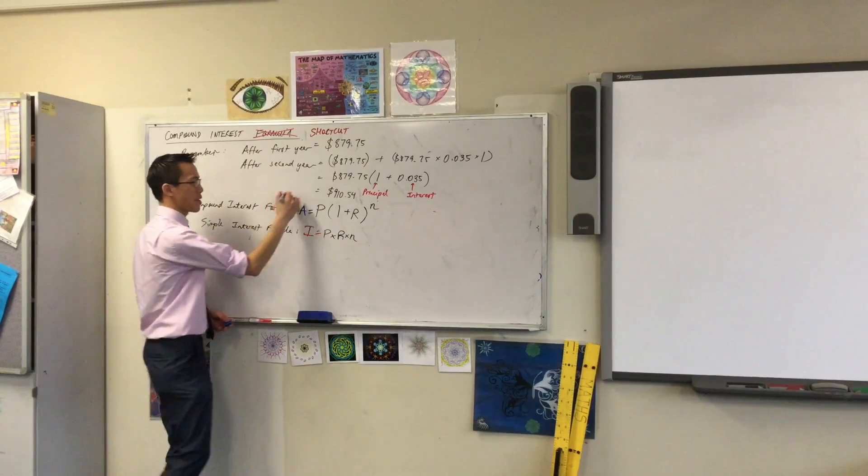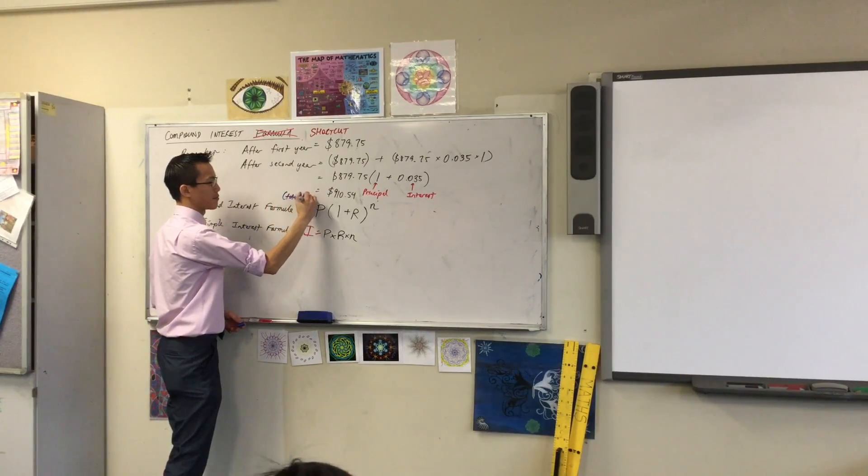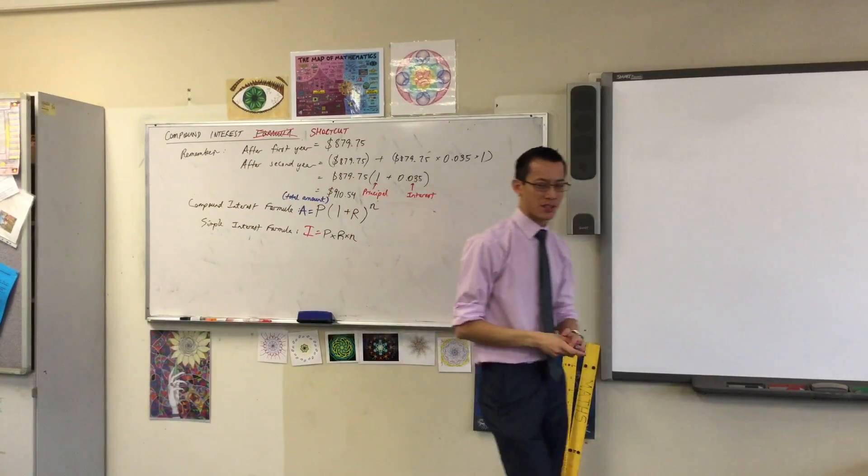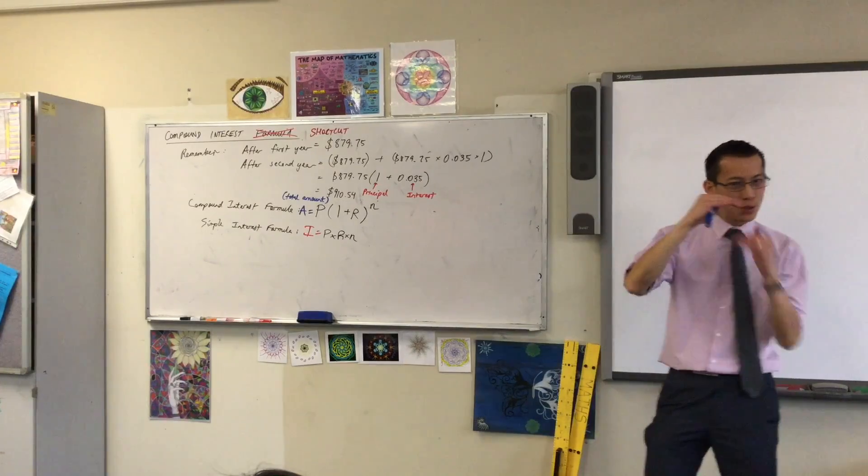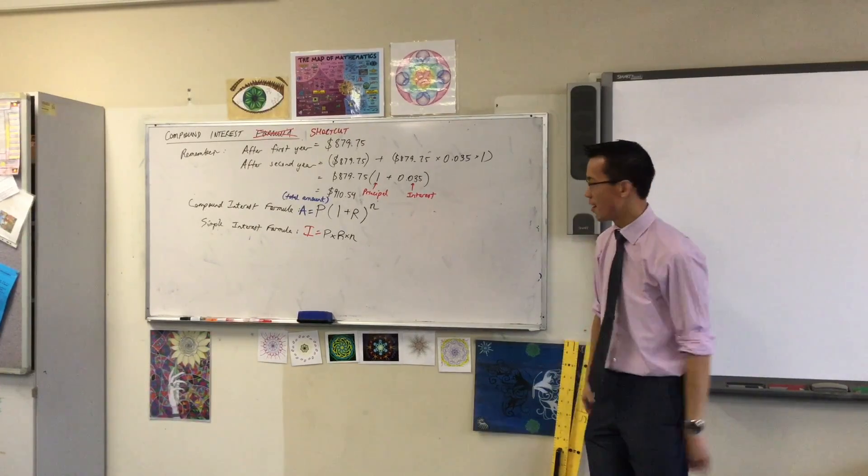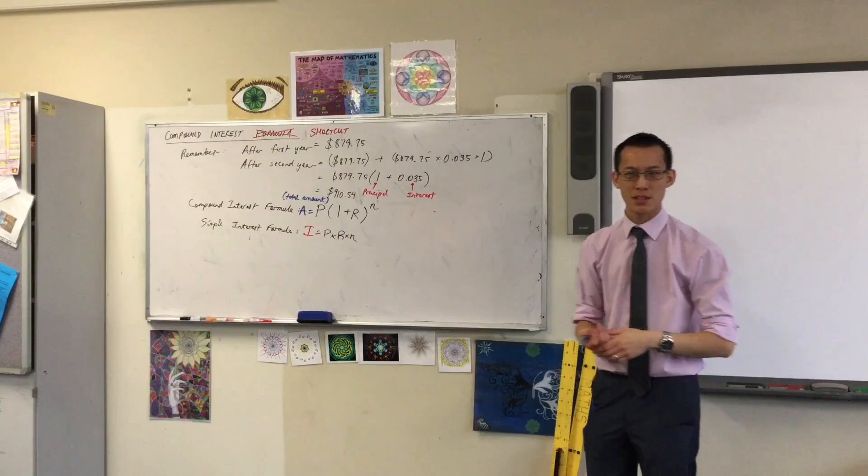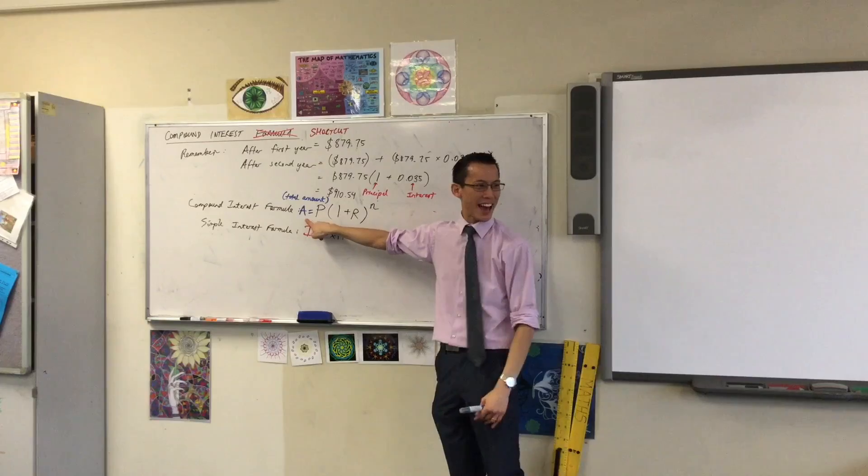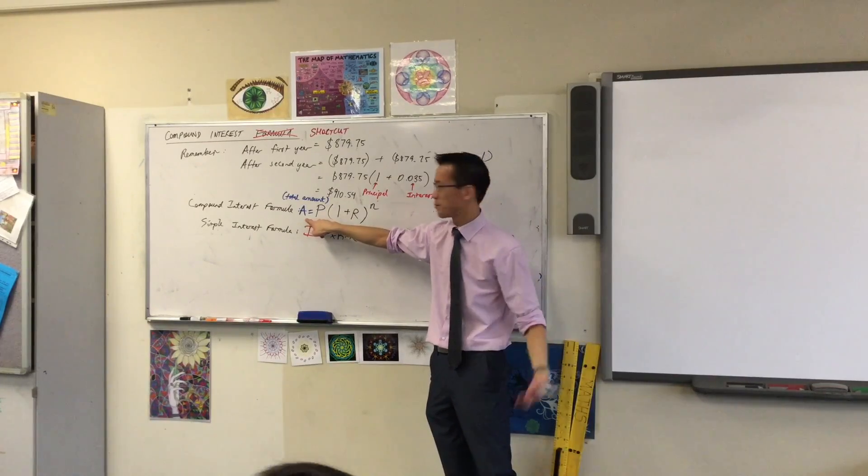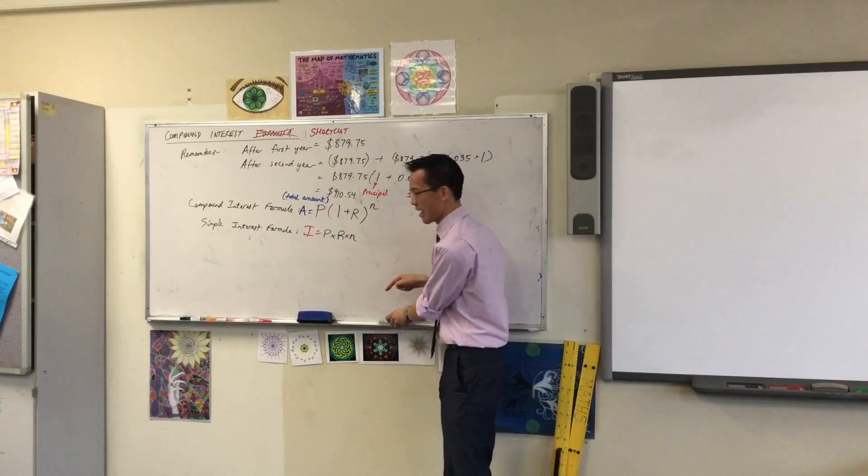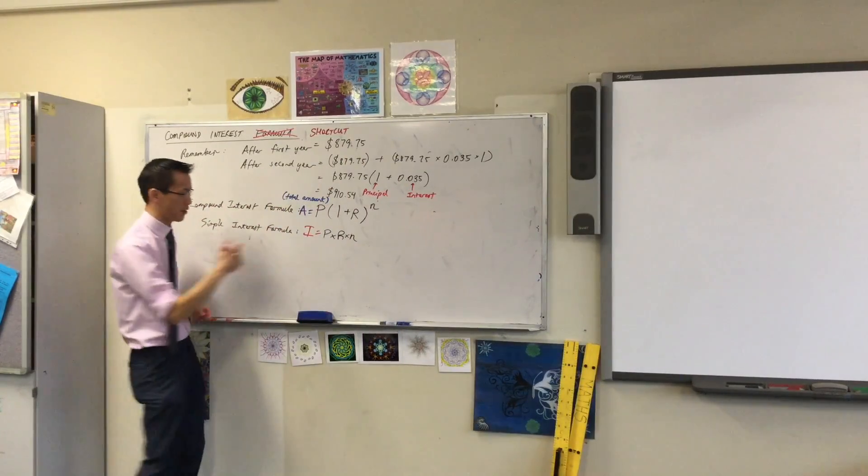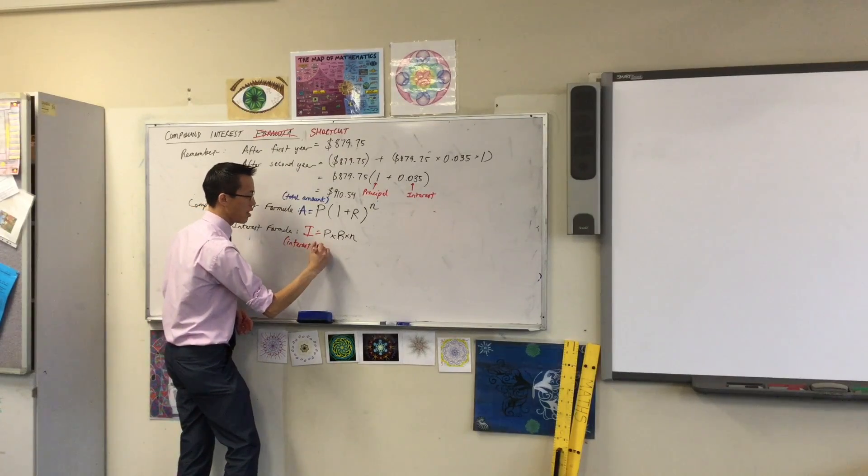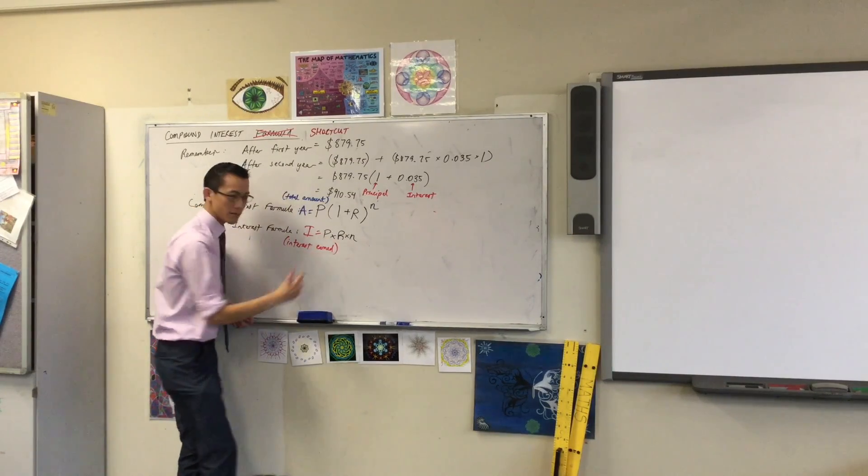If you guys get bank statements in the mail still, usually most people get them by email, but you have two numbers right at the bottom of your bank statement. One of the numbers is how much interest did you earn this month, quarter, however often you get them. And then the final number is this one. So how much do you actually have that you can withdraw if you wanted to? So these two numbers are different, and people often miss the fact that they're calculating two different things. So you've got the total amount for compound interest, and then you've got the interest earned for simple interest.